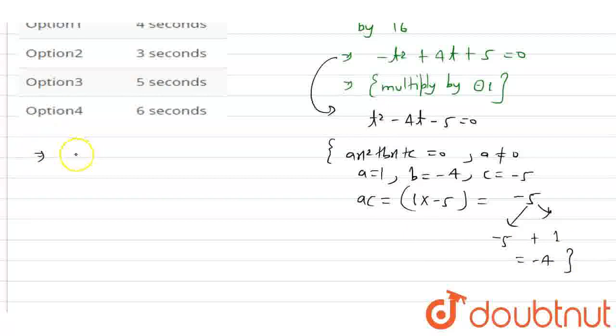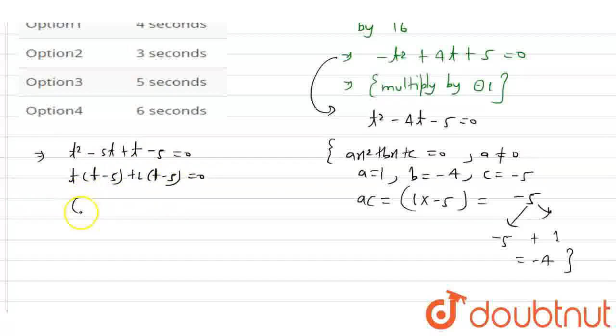We can write this as t square minus 5t plus t minus 5 equals to 0. Taking common terms: t(t minus 5) plus 1(t minus 5) equals to 0. This gives us (t minus 5)(t plus 1) equals to 0. So t equals minus 1 or t equals 5.